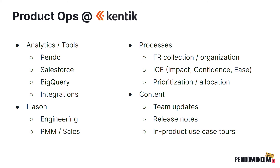One of the big processes I deal with is what we call ICE — our prioritization and ranking process, which stands for Impact, Confidence, and Ease. That's how we score the things in our backlog and decide what goes on the roadmap for quarters ahead. I also deal with content — team updates, release notes, and building the in-product tour guides, where individual PMs provide the content and I'm the implementer.